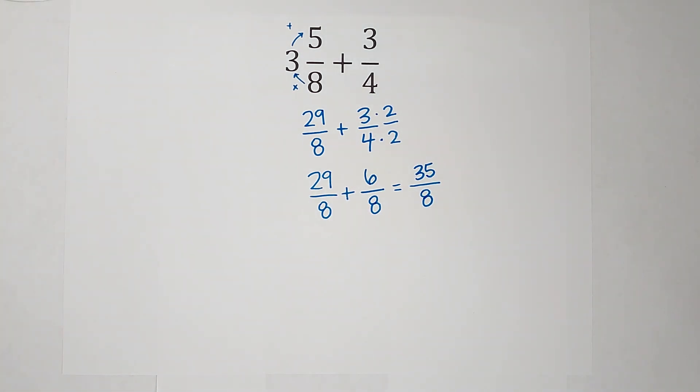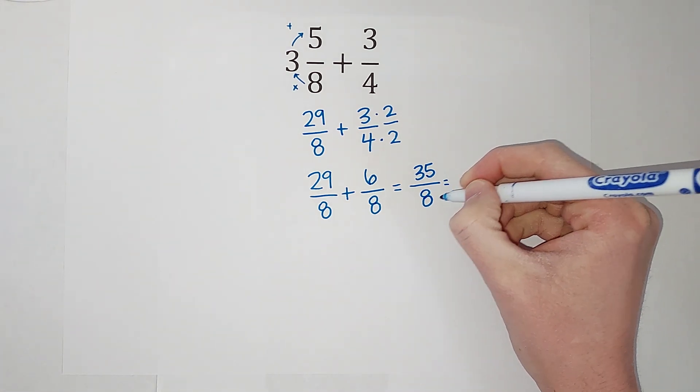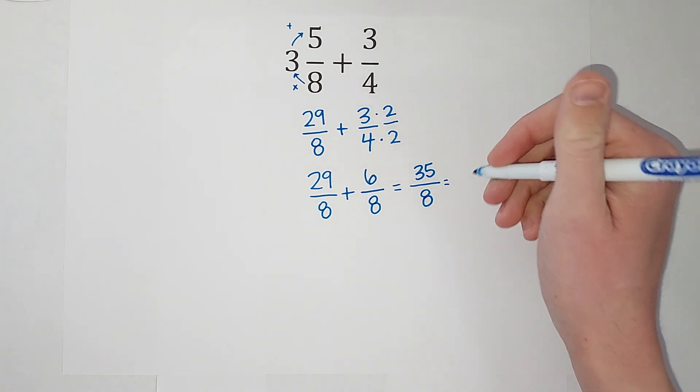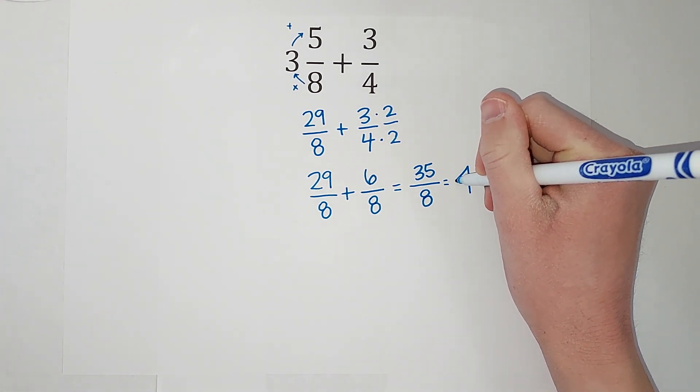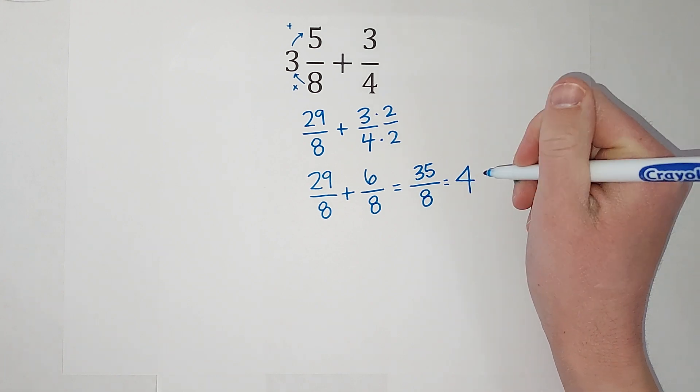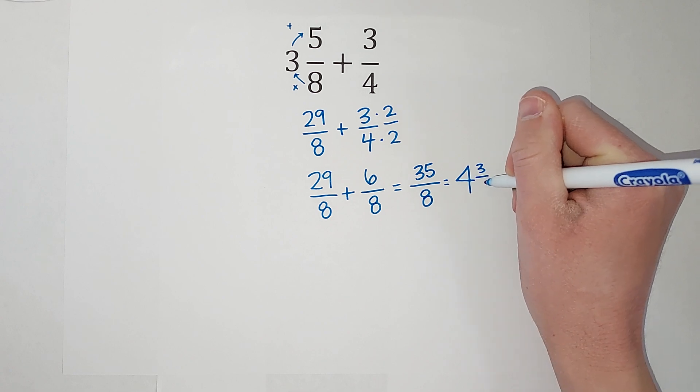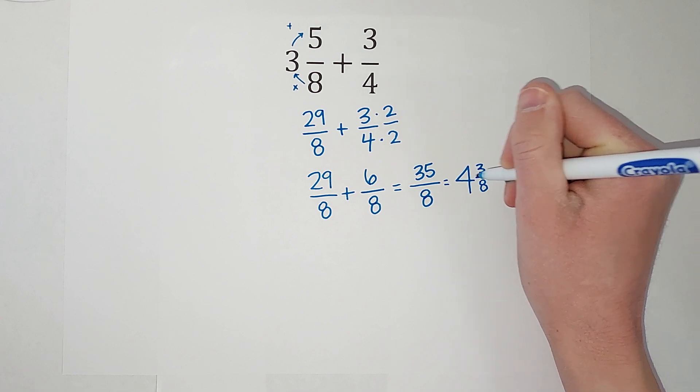Now that is my answer, but a lot of times we like to turn it back into a mixed number. So to do that I think, how many times does 8 go into 35? Well it goes 4 times, right. 8 times 4 gives me 32, so there are 3 left over and my denominator is still 8.